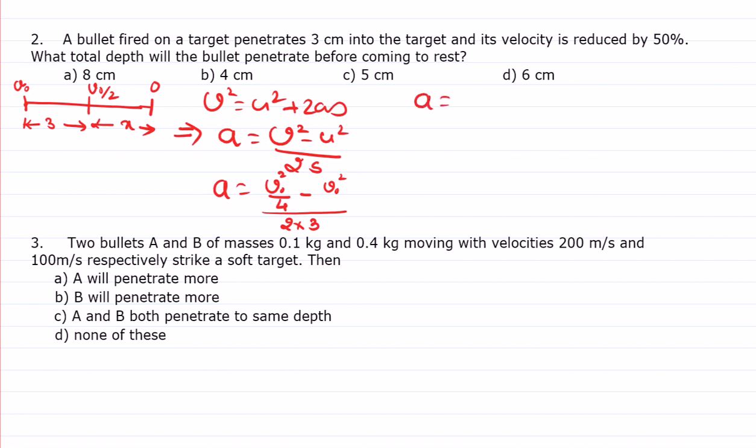minus 3 v naught² by 8. So 4, so 4, okay, v naught² minus 4 v naught², 3 v naught². 3, v naught² minus, divided by 4, and already 2 into 3 is 6 is there, so it means what, v naught² by 8 is the acceleration.